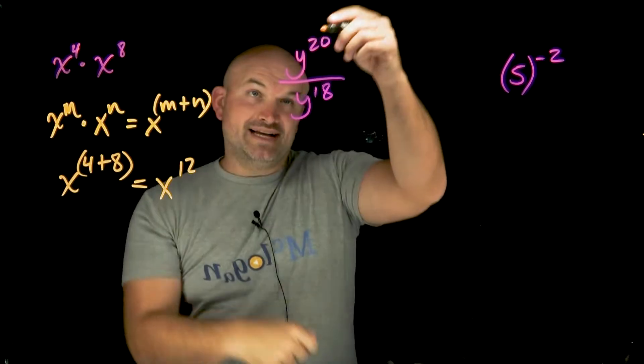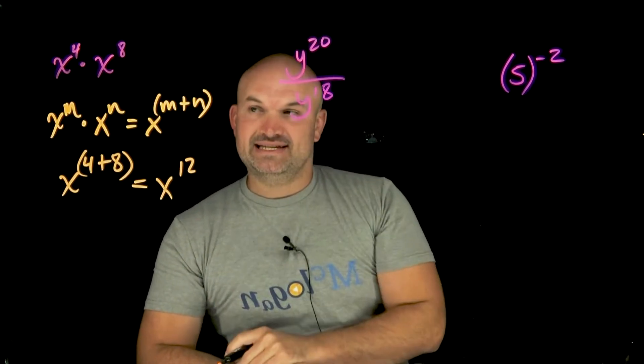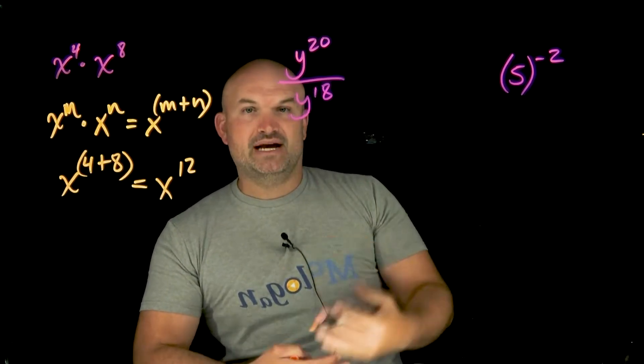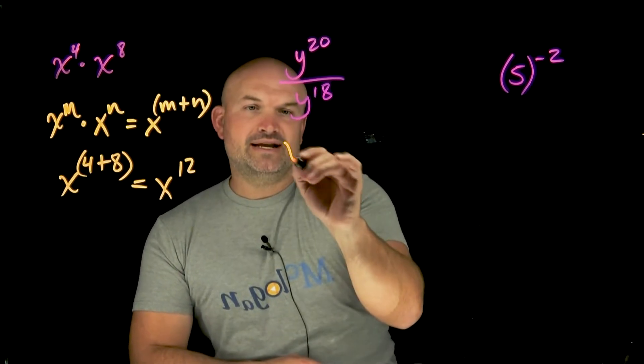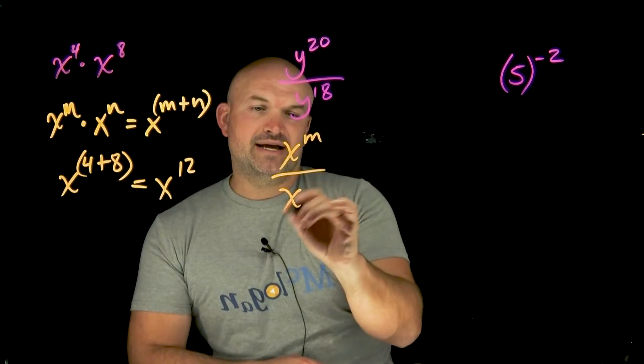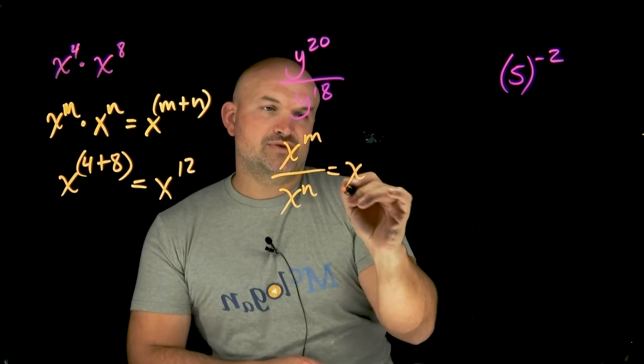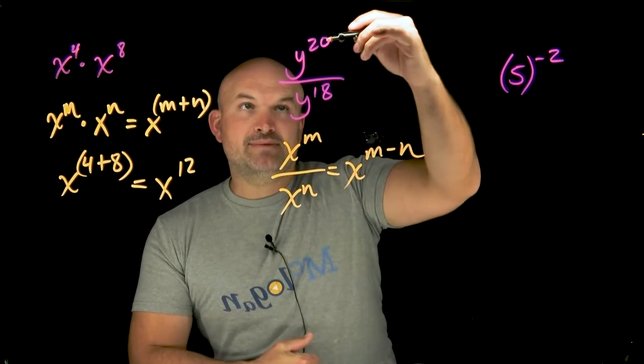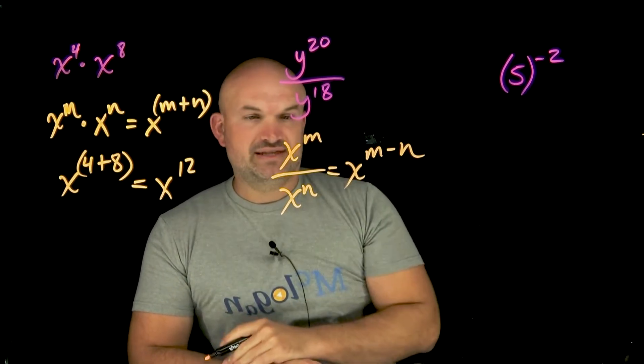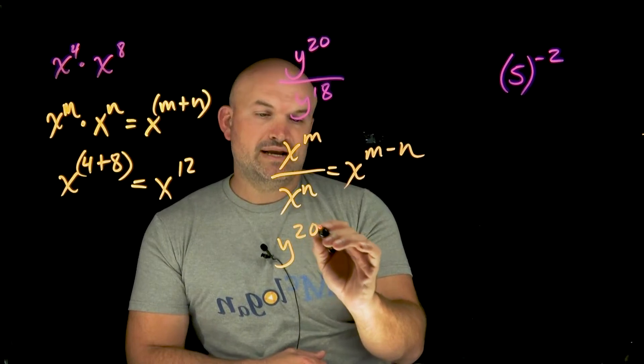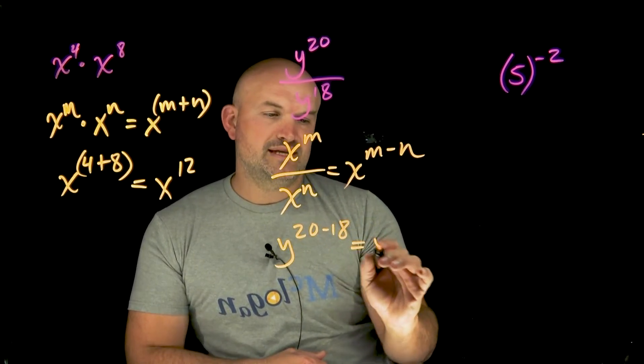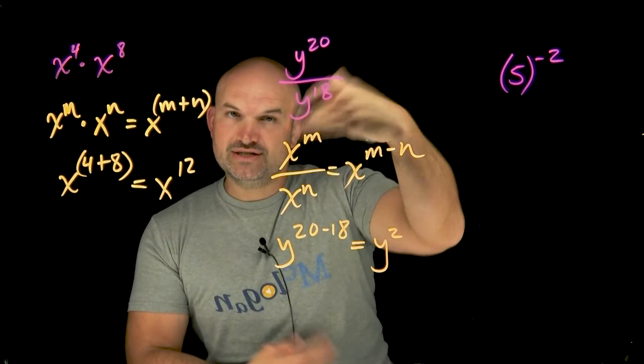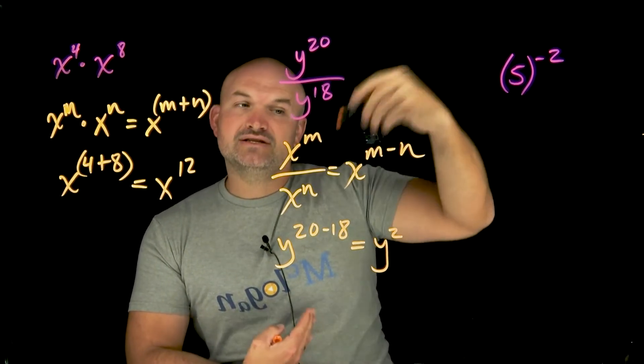Over here, we have y to the twentieth divided by y to the eighteenth. With multiplication as addition, you can think of division as subtraction. So x to the m divided by x to the n equals x to the m minus n. We subtract the power in the denominator from the power in the numerator. So y to the twenty minus eighteen gives us y to the second power. Remember, quotient or division is represented by subtraction.